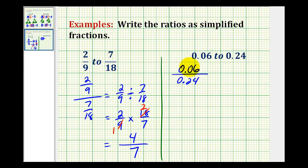Now in a fraction form, we don't want to have decimals in the numerator and denominator. What we'd like to do is move the decimal point to the right two places, which is equivalent to multiplying the numerator and denominator by 100. So this would now be 6 over 24, and then we can just simplify this fraction.